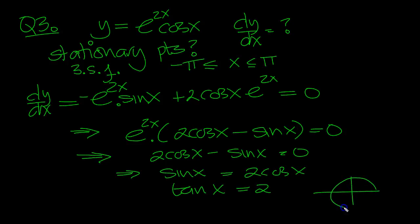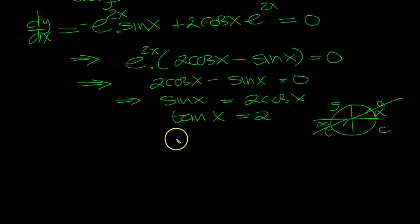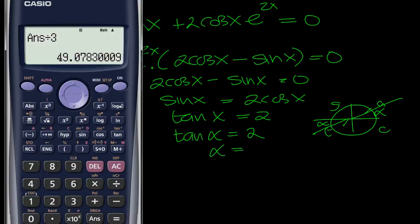So let's draw a circle. CAST. Tan is positive here and here, so we draw two lines. Mark off alpha. So tan alpha is 2 then. So alpha is equal to shift tan 2 in radians mode, so shift mode 4, and then it's shift tan 2.